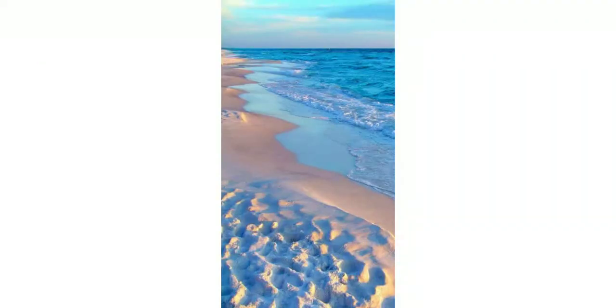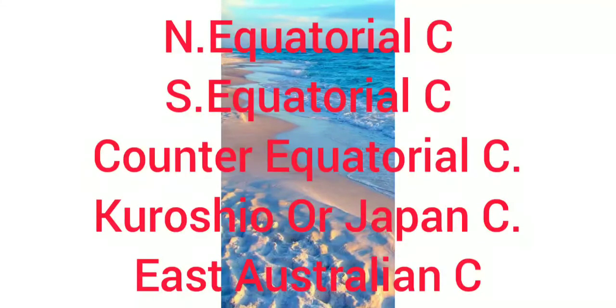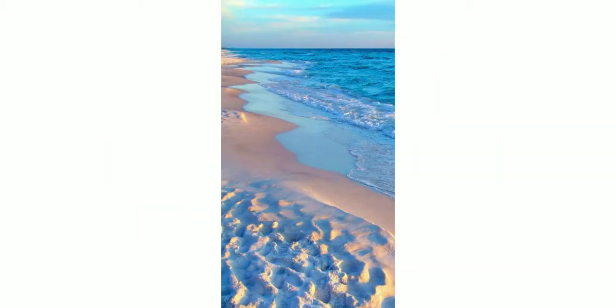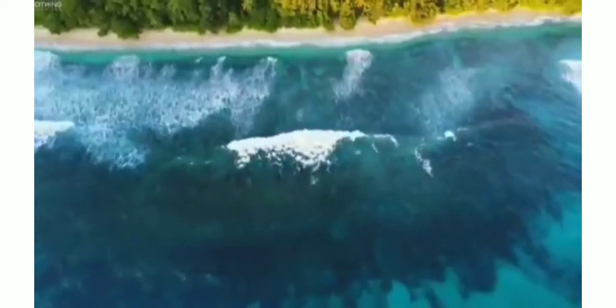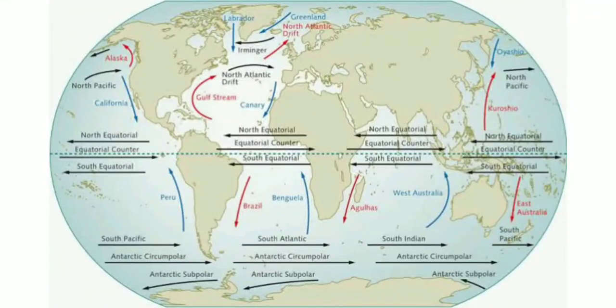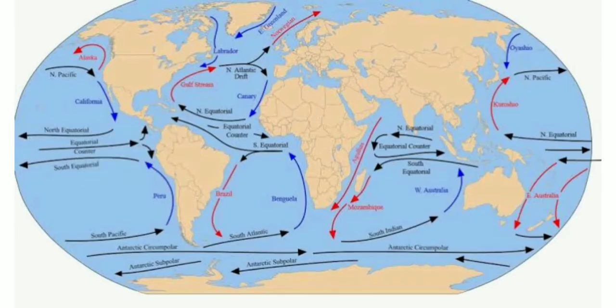Now let's move to the Pacific Ocean — concentrate on Asia, North America, and Australia. For warm currents: the North Equatorial Current flows westward from the western coast of Mexico to the Philippines. The South Equatorial Current flows westward in the Southern Pacific Ocean and bifurcates into northern and southern branches near New Guinea. The Counter Equatorial Current flows between the North and South Equatorial Currents in the opposite direction. The Kuroshio Current (Japan Current) flows from Taiwan to the Bering Strait. The East Australian Current flows along the eastern coast of Queensland, Australia.